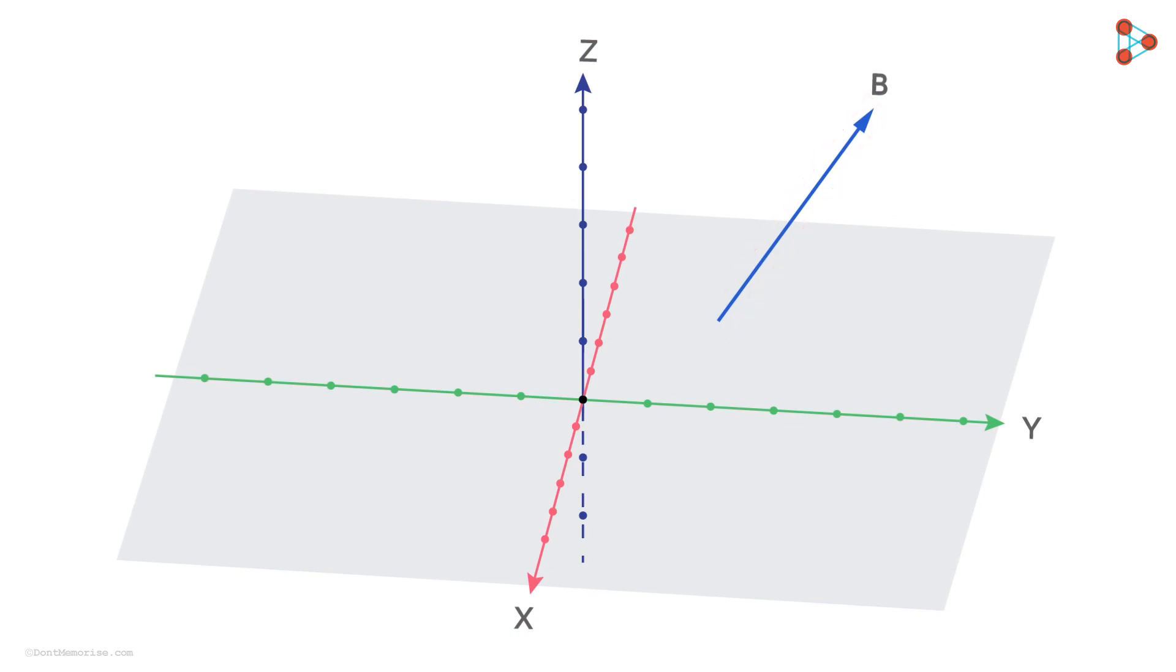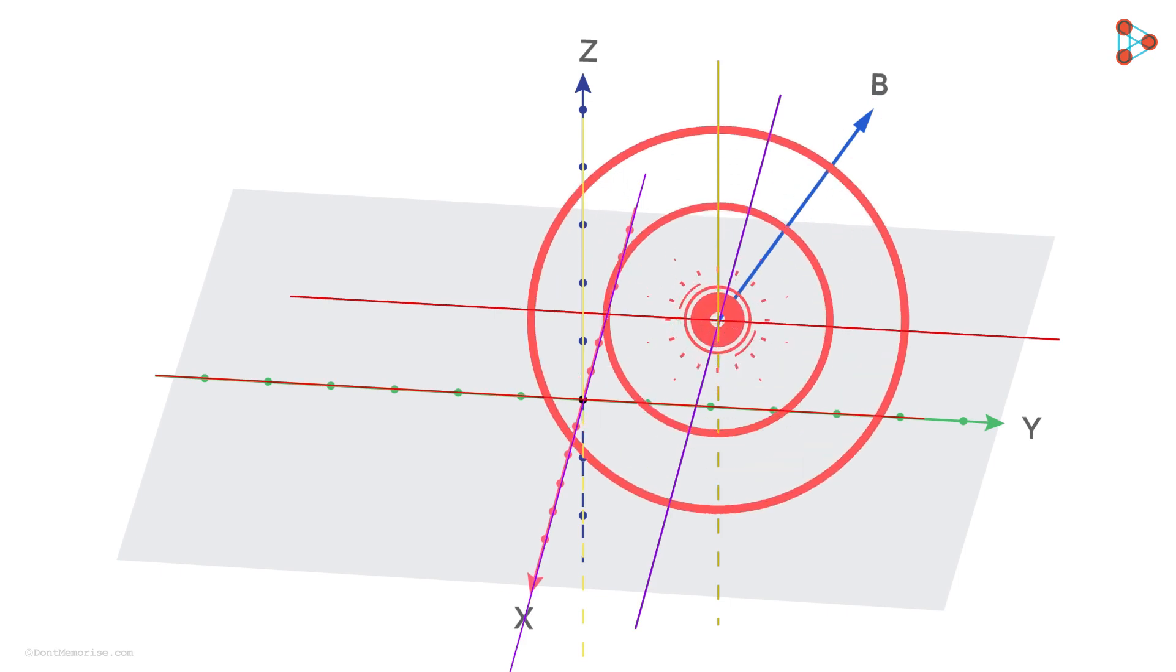For this vector, you can imagine three lines parallel to three coordinate axes intersecting at the initial point of the vector. The angles that the vector makes with them will be its direction angles.